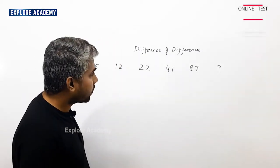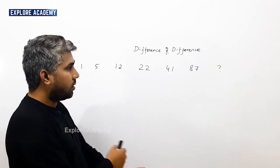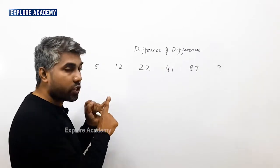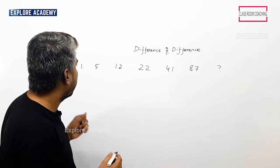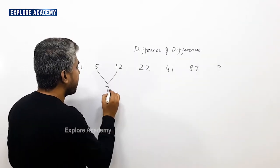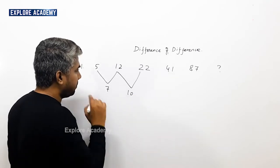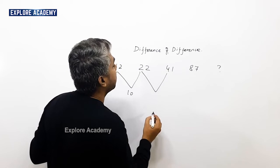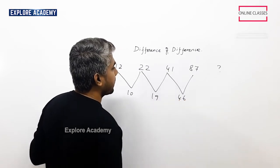5, 12, 22, 41, 87 — question mark. We will tell you the difference of difference. First, the difference is 7, 10, 19, 46.